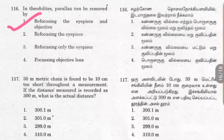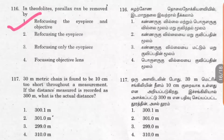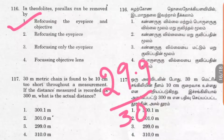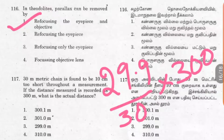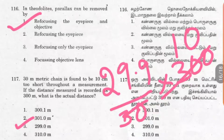Question 117: A 30 meter metric chain is found to be 10 centimeters too short throughout a measurement. If the distance measured is recorded as 300 meters, what is the actual distance? Since the chain is 10 cm short, its actual length is 29.9 meters. The formula is: actual distance equals (29.9 divided by 30) into 300, giving 29.9 into 10, which equals 299 meters. Option 3 is the right answer. If it were 10 cm too long, you would use 30.1 divided by 30 into 300.